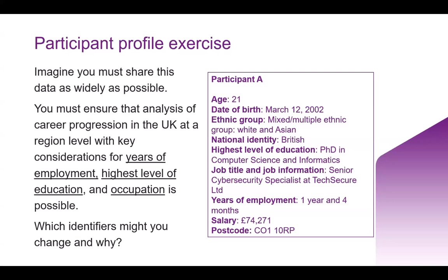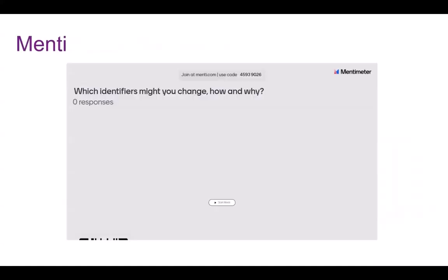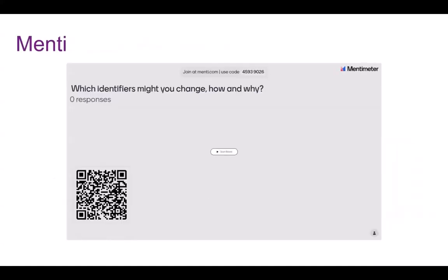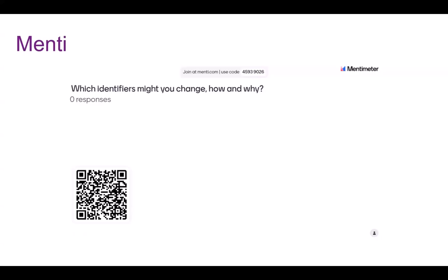What you must ensure is sharing the data as widely as possible, with as little access controls as possible, but ones that allow the analysis of career progression in the UK at a regional level with key considerations for year of employment, highest level of education, and occupation. Which identifiers might you change? How and why? Please enter each identifier separately with an explanation in the Mentimeter — take your time, we've got a few minutes.